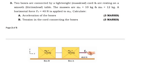Now I also have question 3 which is saying two boxes are connected by a lightweight massless cord and are resting on a smooth frictionless table. The masses are MA to be 10 kg, MB to be 12 kg. A horizontal force Fp equal to 40 N is applied to MA.